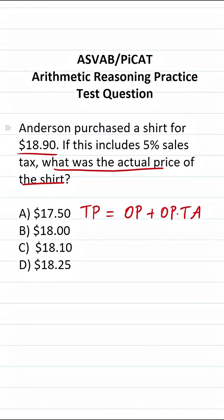The total price is $18.90. What was the original price of the shirt? That's unknown. So I'm going to let the original price be represented with the letter variable X. So this becomes X plus, again, this is unknown, so let's call it X.